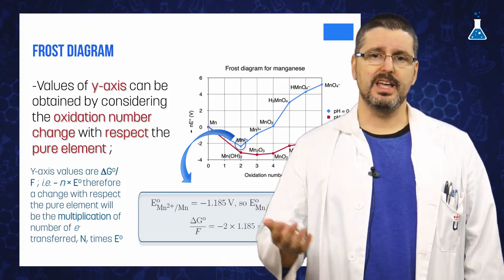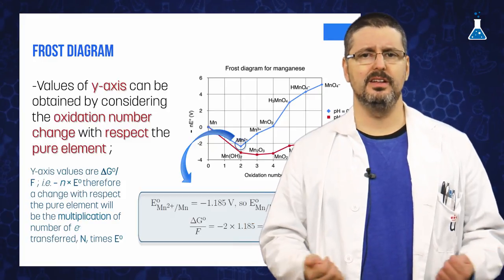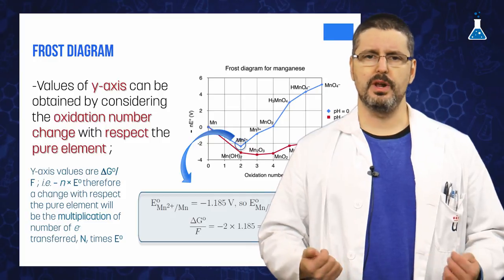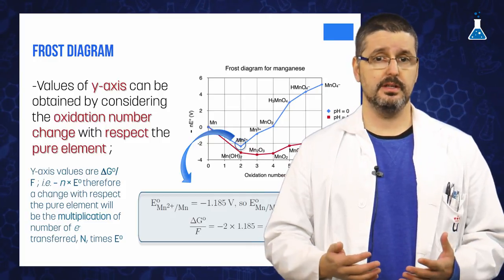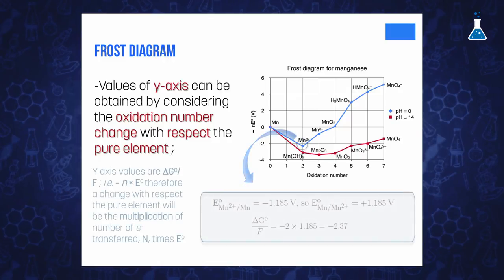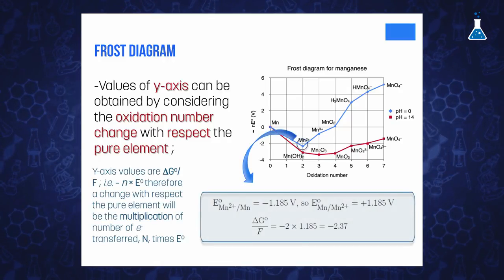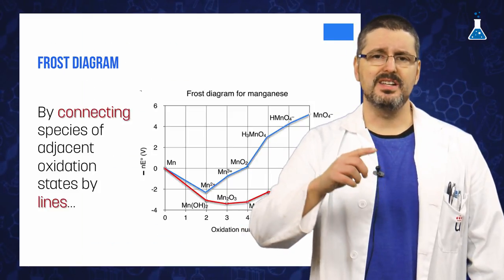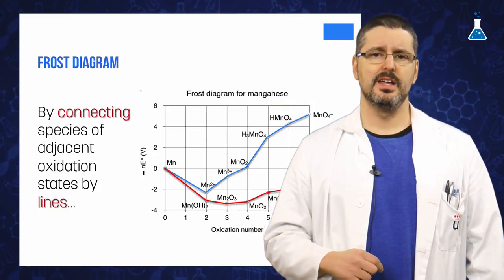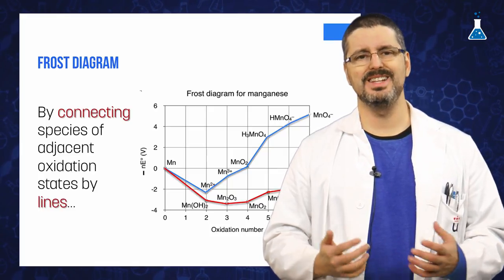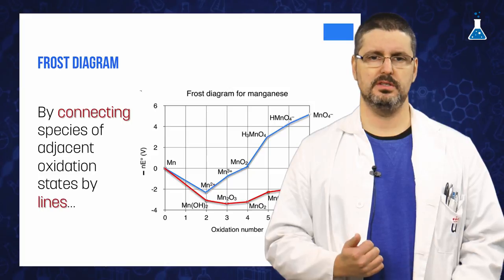The values of the ordinate axis can be obtained directly if we consider the oxidation number change with respect to the pure element. In that case, the value will be the multiplication of the number of electrons transferred during that change by its standard reduction potential. Finally, if we connect species of adjacent oxidation states by lines, that will give us a qualitative view of the redox properties of the element in its different oxidation states.